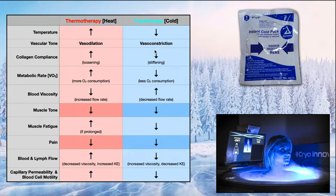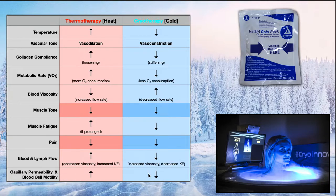Cryotherapy produces a decreased flow of blood and lymph, due to increased viscosity and overall decreased kinetic energy — the opposite of what we see with heat. Cryotherapy also produces decreased capillary permeability and blood cell motility. The key takeaways are that cryotherapy, like thermotherapy, can be used to decrease pain, and additionally cryotherapy can be used to treat inflammation.